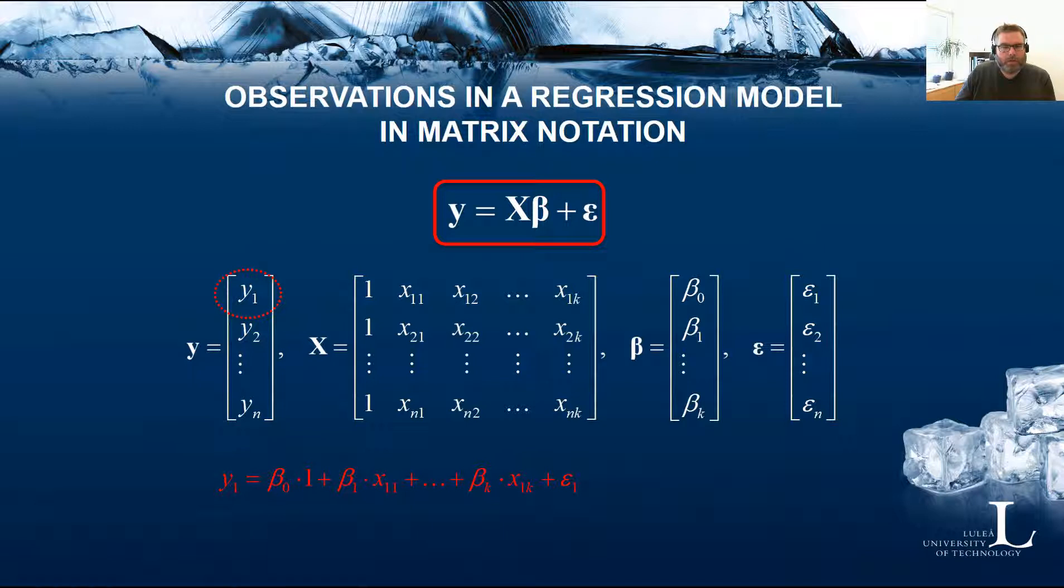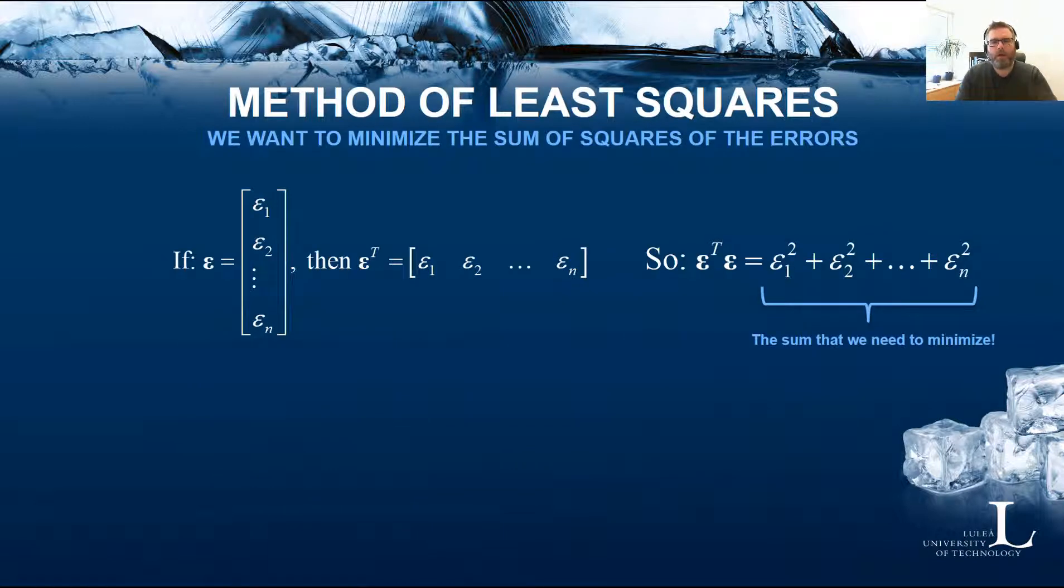Now let's work a bit to try to create the sum of squared residuals that we need for the method of least squares. If epsilon is this column vector, then we can transpose this and get a row vector here. We can multiply them together, epsilon T times epsilon, and create this sum of squared residuals that we actually need to minimize in the method of least squares.